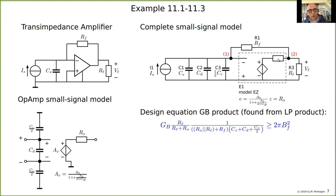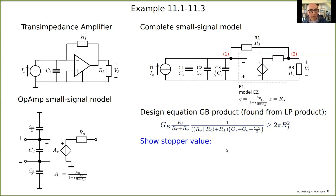I assume Rf is much larger than ro in parallel with rl, so I can simplify the equation. There is one pole from the gain-bandwidth product and another pole consisting of this capacitance and the resistor — Rf in series with the parallel connection of the others — which is the discharge resistance for these three capacitors. From this design equation I can obtain a showstopper value, setting the gain-bandwidth product as the only contributor to loop gain-pole product, with differential mode and common mode capacitances set to zero.